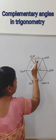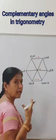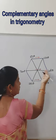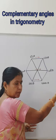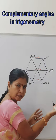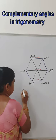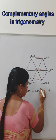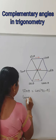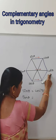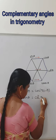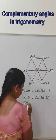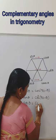So here, sin theta is equal to cos(90 minus theta). Moving forward, tan theta is equal to cos(90 minus theta), and sec theta is equal to cos(90 minus theta). So sin theta equals cos(90 minus theta) is one complementary angle, tan theta equals cos(90 minus theta) is another, and sec theta equals cos(90 minus theta) is a third.